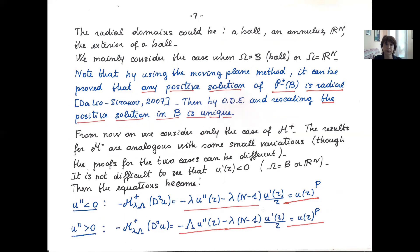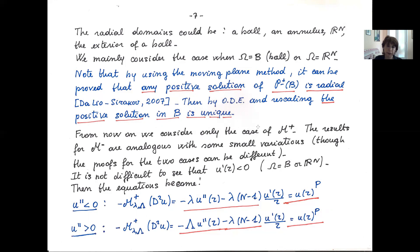In the radial case, the domains to consider are: if bounded, a ball or an annulus; if unbounded, the whole space or the exterior of a ball. In the case of the ball, a result by Dalio and Sirakov uses the classical moving plane method to prove every positive solution is radial. Moreover, using invariance by rescaling the equation, one can prove that the positive solution in the ball is unique.